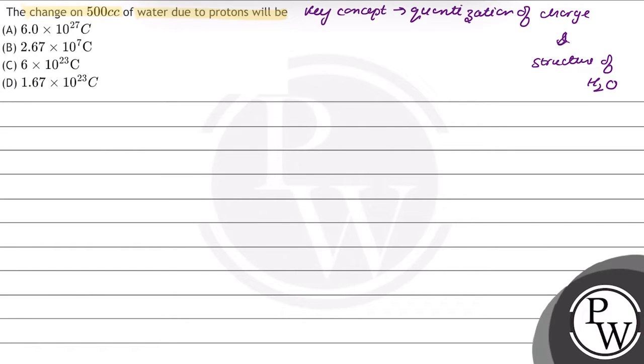Quantization of charge says that the total charge on a system or an object is the integral multiple of E. The total charge present on an object, capital Q, is equal to N into E.